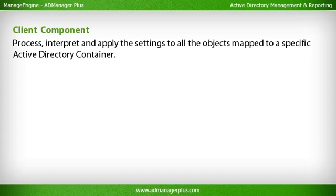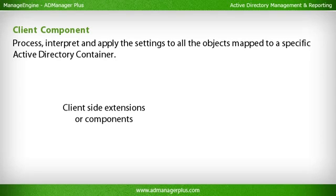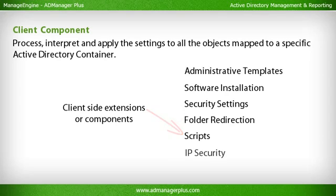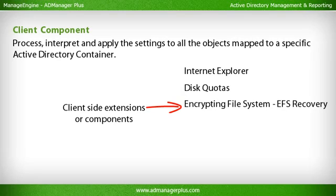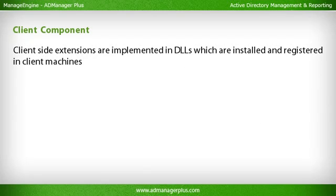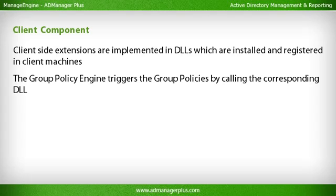The Client Component interprets and applies the group policy settings to client computers and target users. Client-side extensions are components running on client systems and are responsible for processing, interpreting and applying the settings to all objects mapped to a specific Active Directory container. The default client-side extensions include: Administrative Templates, Software Installation, Security Settings, Folder Redirection, Scripts, IP Security, Internet Explorer Maintenance, Disk Quotas, Encrypting File System (EFS) Recovery, Remote Installation, and Quality of Service (QoS) Packet Scheduler. These are implemented in DLLs installed and registered in client machines during the OS installation process. The group policy engine triggers group policies by calling the corresponding DLL from the registry using the corresponding component registry settings.